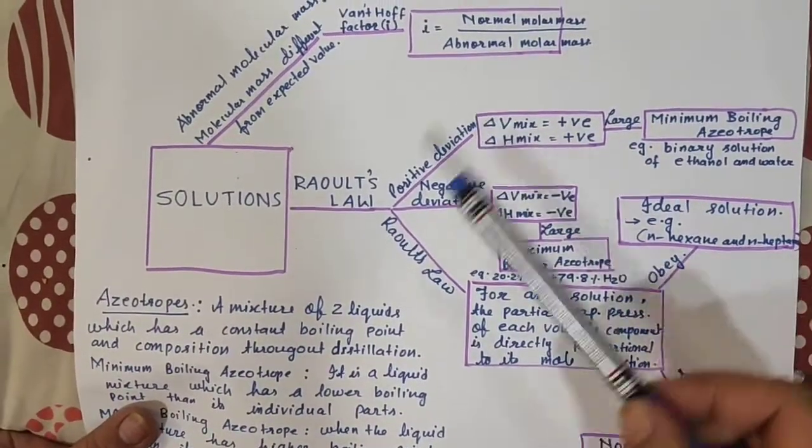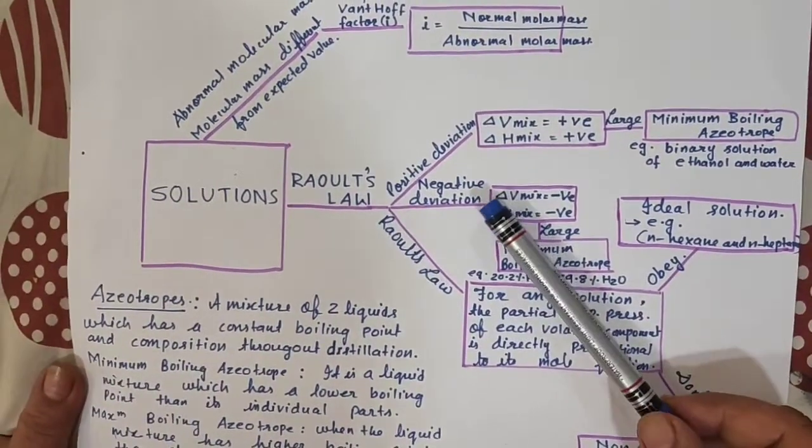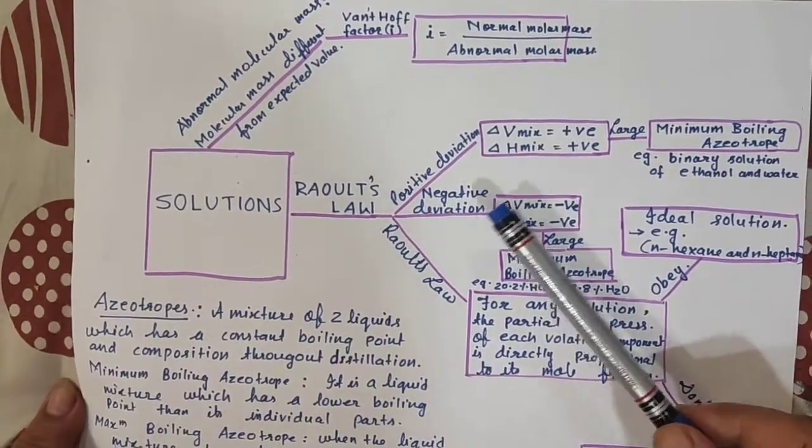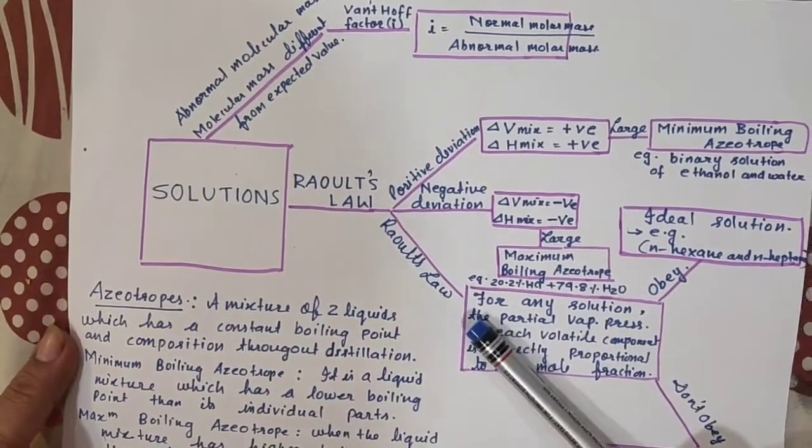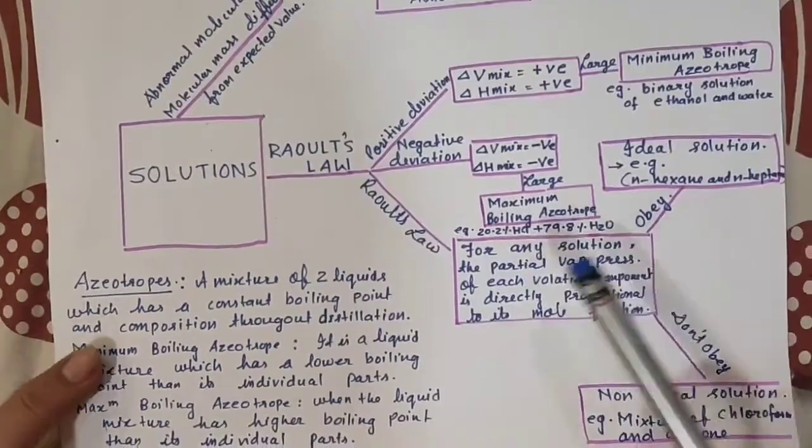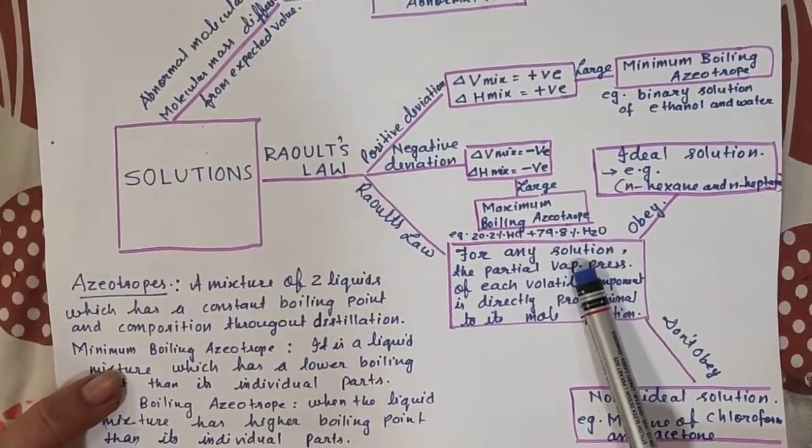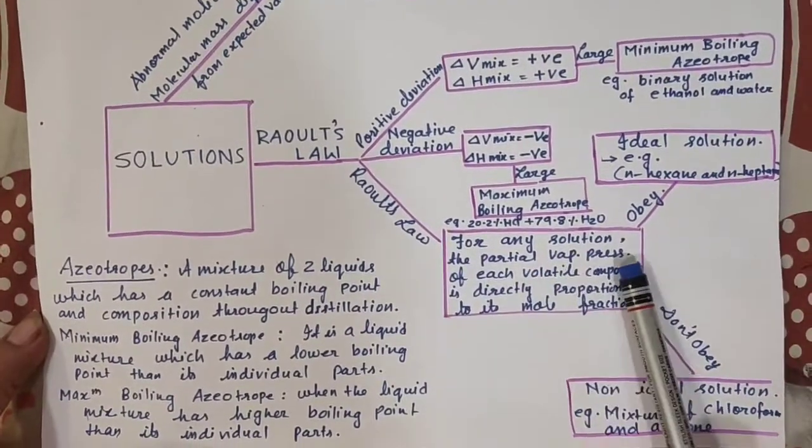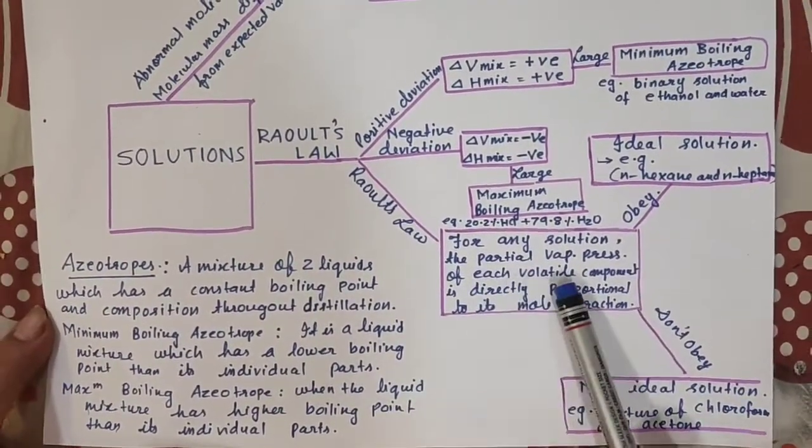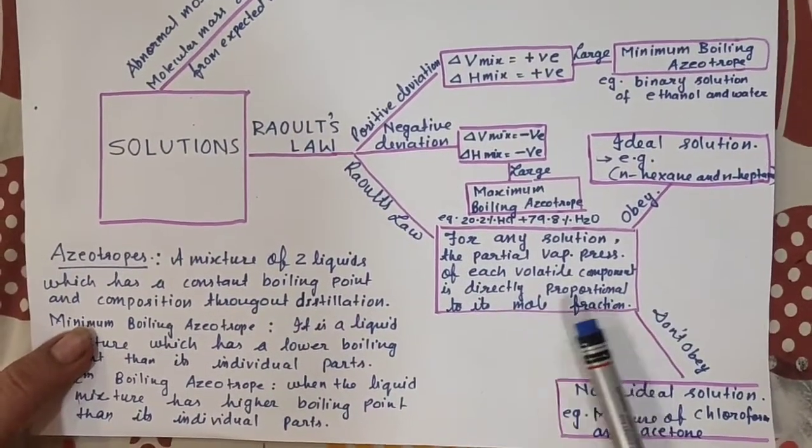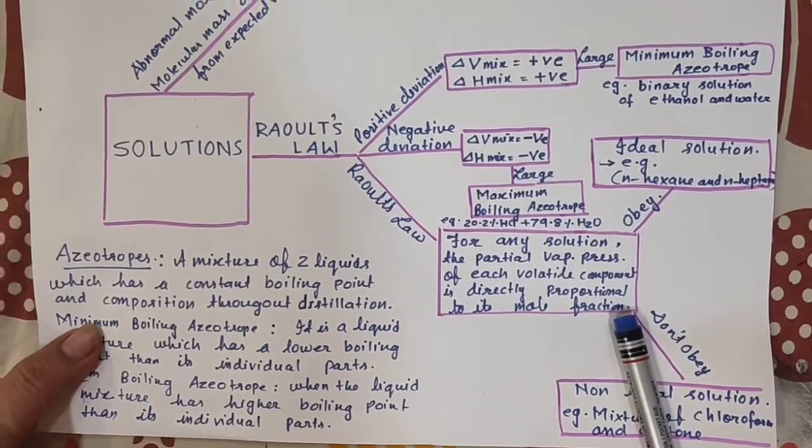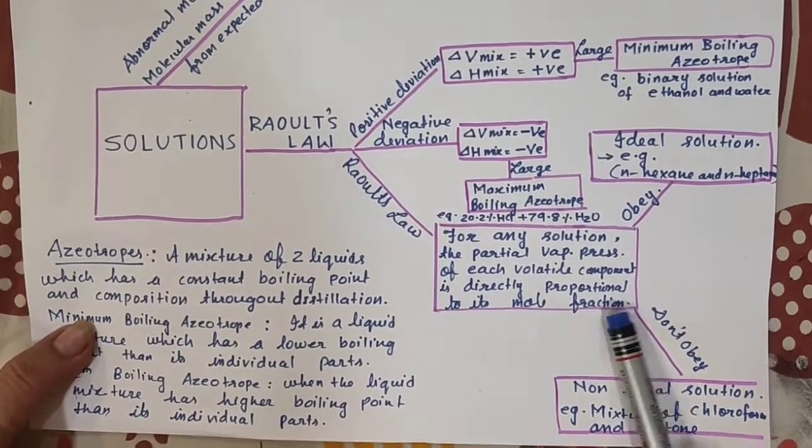This is positive deviation, negative deviation. I explained you earlier in previous videos. What is Raoult's law? For any solution, the partial vapor pressure of each volatile component is directly proportional to its mole fraction. This is Raoult's law.